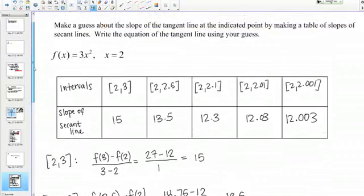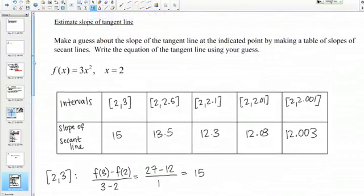What we've done so far is we've simply carefully chosen some intervals that are getting tighter and tighter around the point we care about, which is x equals 2, and we've calculated the slope of the secant line to the curve over those intervals.